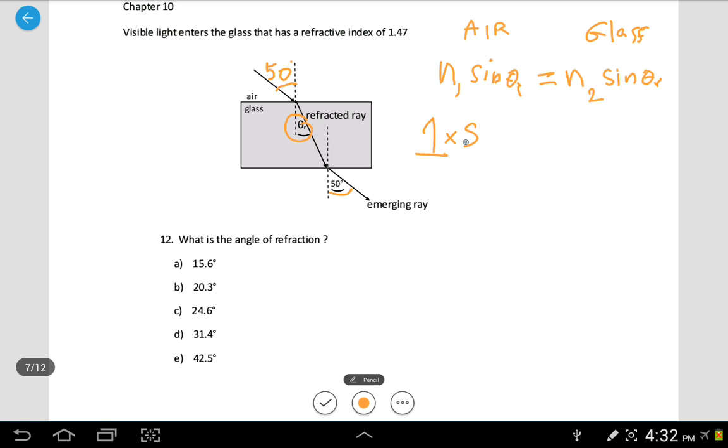Multiplied by sine of 50 degrees equals N2. N2 is given to us, which is the refractive index of the glass, 1.47, multiplied by sine of theta R.